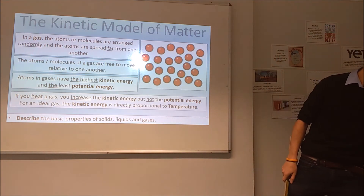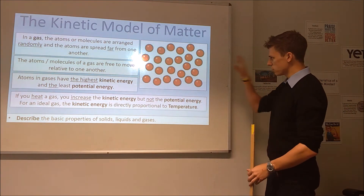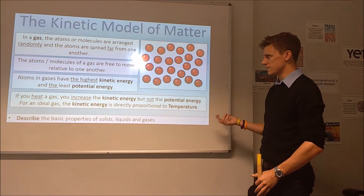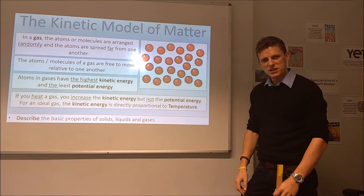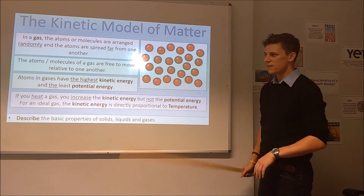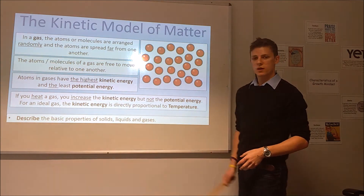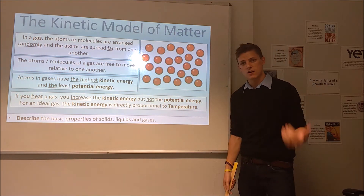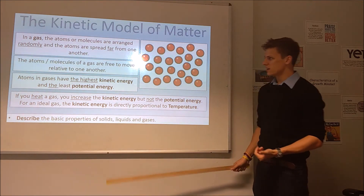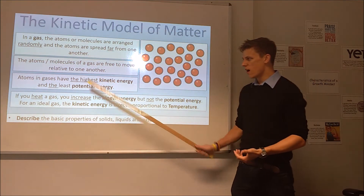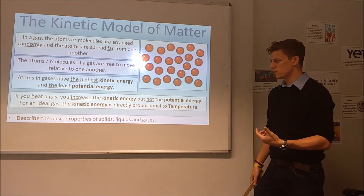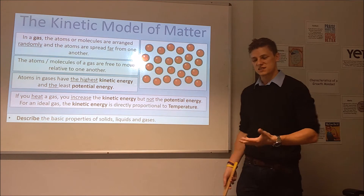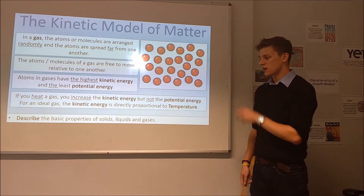Moving on to a gas — the spacing has increased significantly compared to the liquid, and we can see a random arrangement of particles with no regular pattern. We've got the highest kinetic energy because they're moving around at the highest speed, and we have the least negative potential energy because they're spread out. So in a gas, the particles have the highest kinetic energy and the closest to zero potential energy of all three phases.